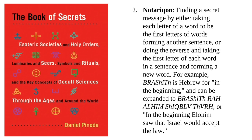2. Notarikon: finding a secret message by either taking each letter of a word to be the first letters of words forming another sentence, or doing the reverse and taking the first letter of each word in a sentence and forming a new word. For example, Brashith is Hebrew for 'in the beginning,' and can be expanded to Brashithra him shikb of thvrh — or 'in the beginning Elohim saw that Israel would accept the law.'